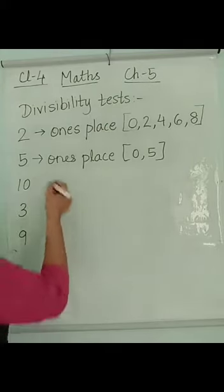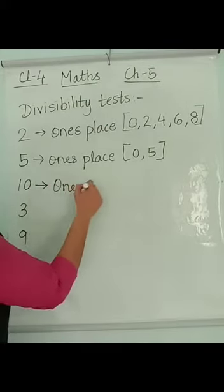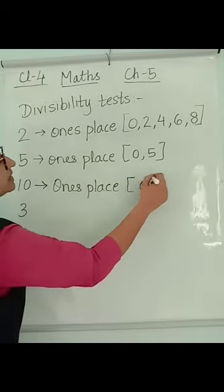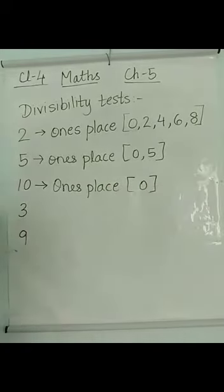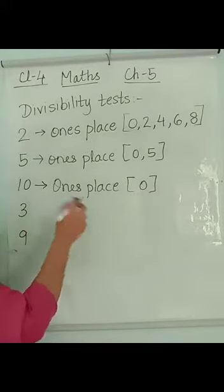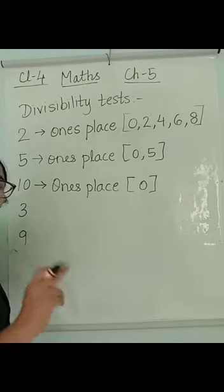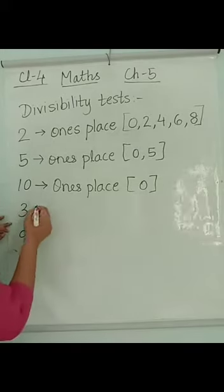For 10, you check the ones place again and check for 0. If the ones place has 0, then that number will be completely divisible by 10, remainder will be 0.